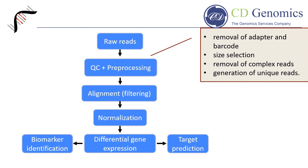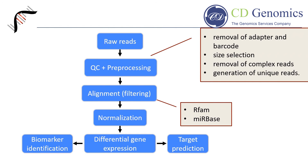Normalization is the process to make expression levels comparable across libraries. RFAM and miRBase are two common databases for small RNA analysis. RFAM is an open-access database providing information about tRNA, rRNA, and snoRNA, etc. miRBase contains sequences and annotations of all known miRNAs across species.